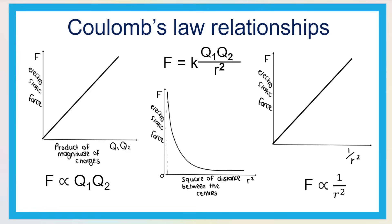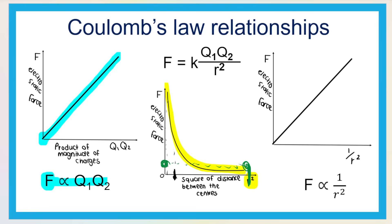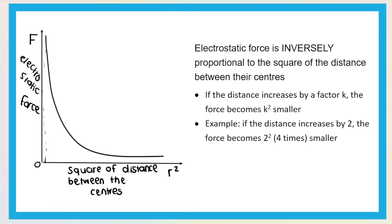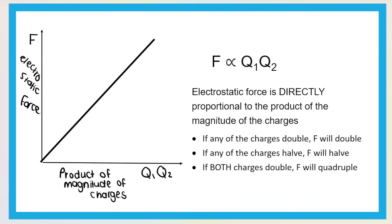Here is a visual representation of the relationships. The electrostatic force is directly proportional to the product of the magnitude of the charges — a directly proportional relationship looks like a straight line through the origin. The electrostatic force is inversely proportional to the square of the distance between the centers — that relationship looks like a curve. If R is very large, the force is very small; if the distance is very small, the force is very big. I will go into these relationships in more detail in upcoming videos.